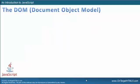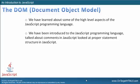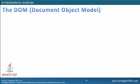So the Document Object Model. We've learned about some of the high-level aspects of JavaScript programming language. We've talked about comments in JavaScript, we've looked at proper statement structure in JavaScript, and we've actually learned about variables and the different types of variables that are available. Now we're going to start to dig into the power of JavaScript and what it can actually do for us as we're designing our web pages.